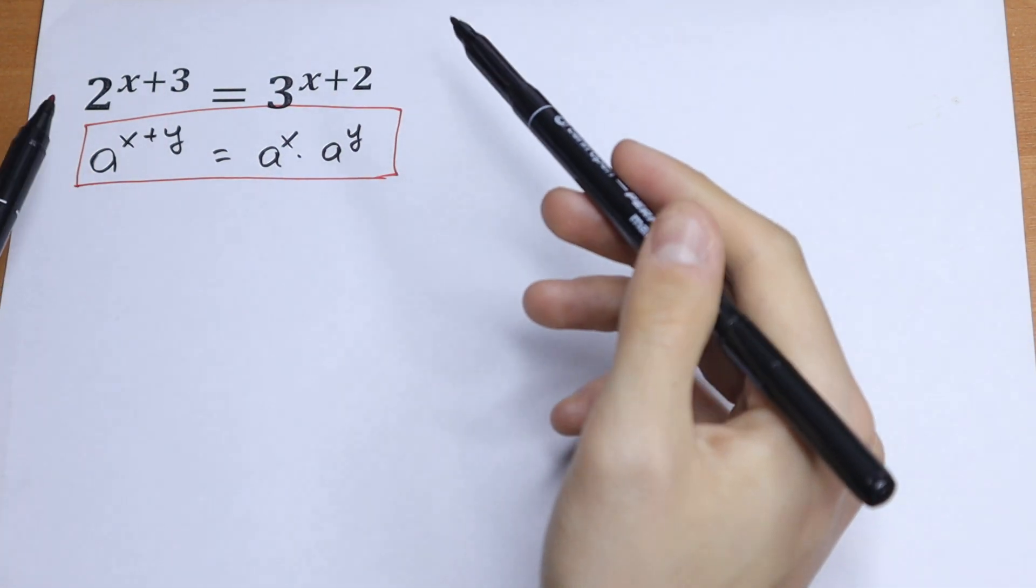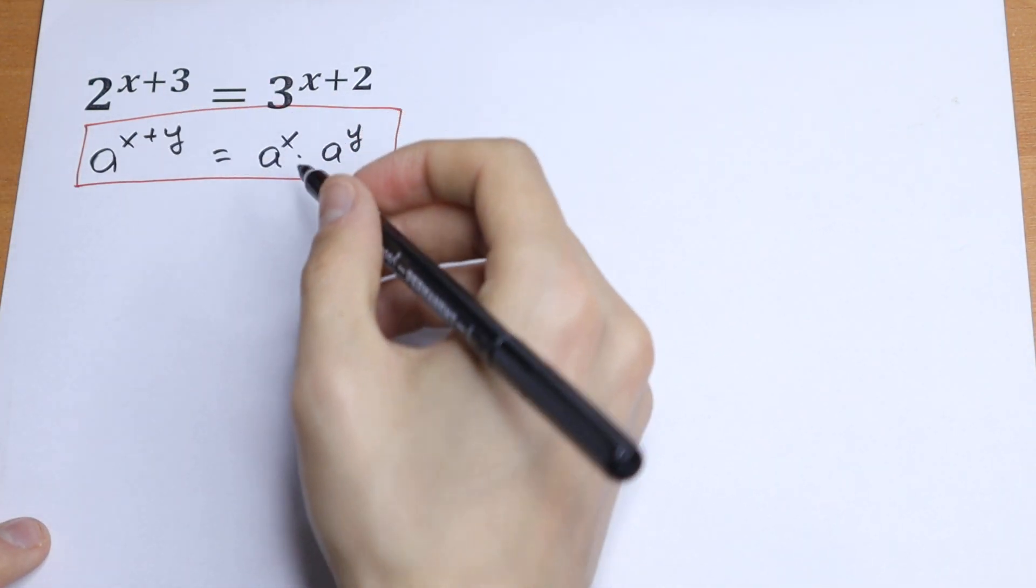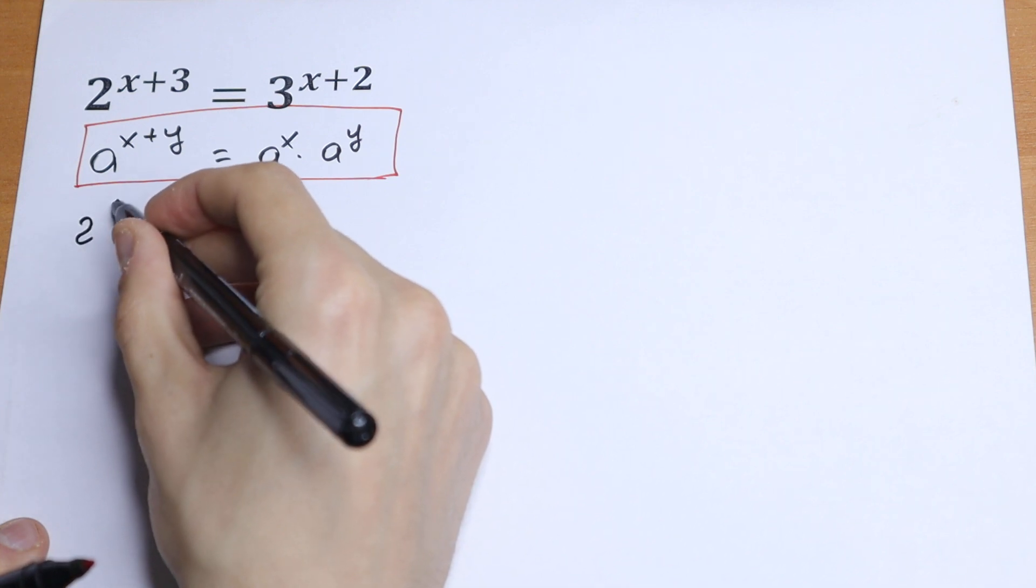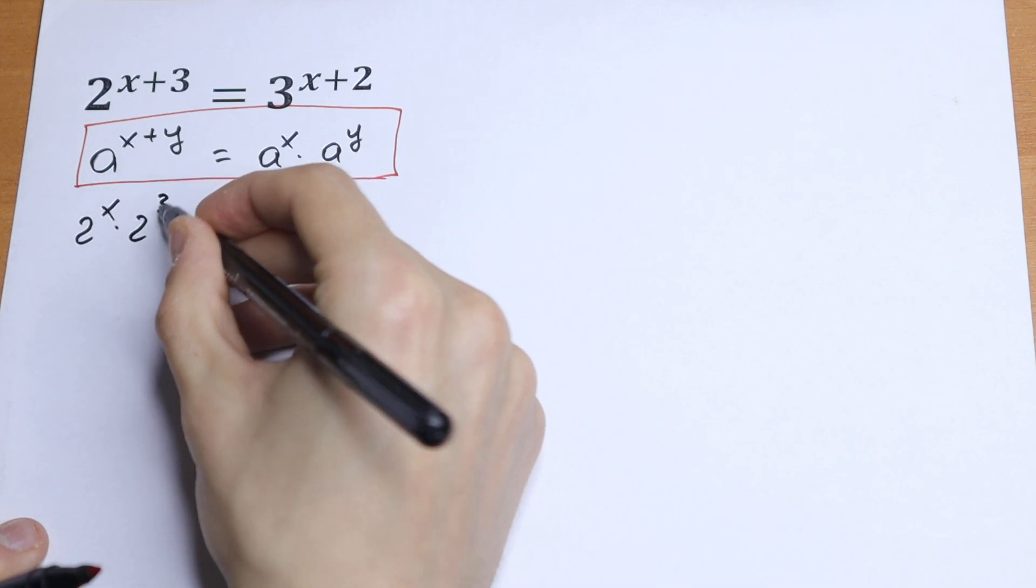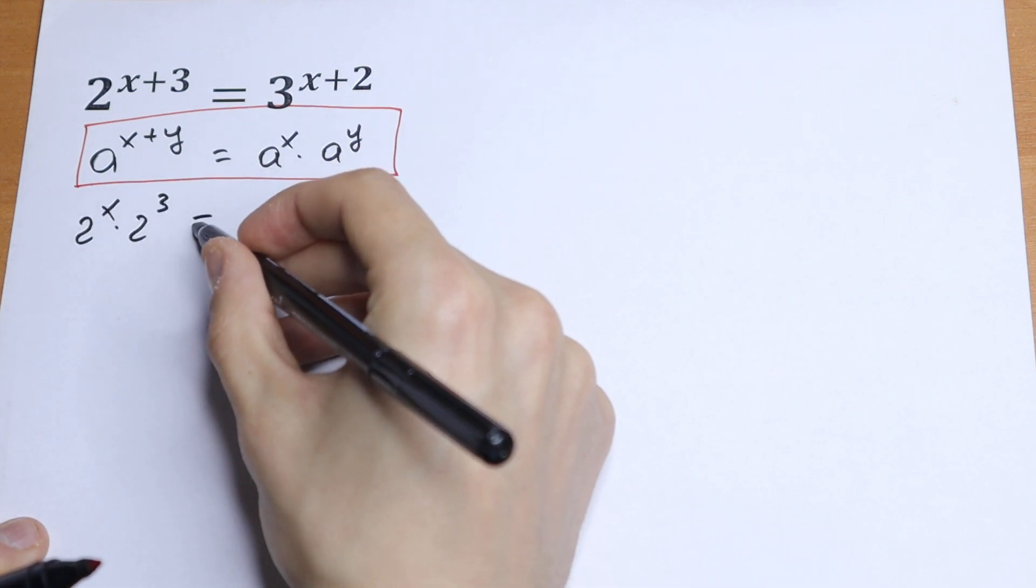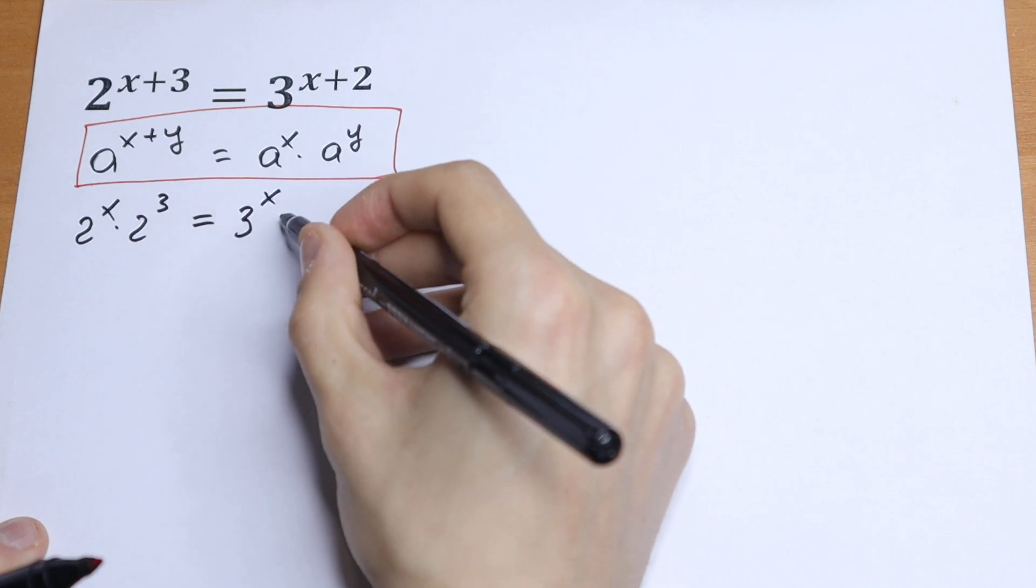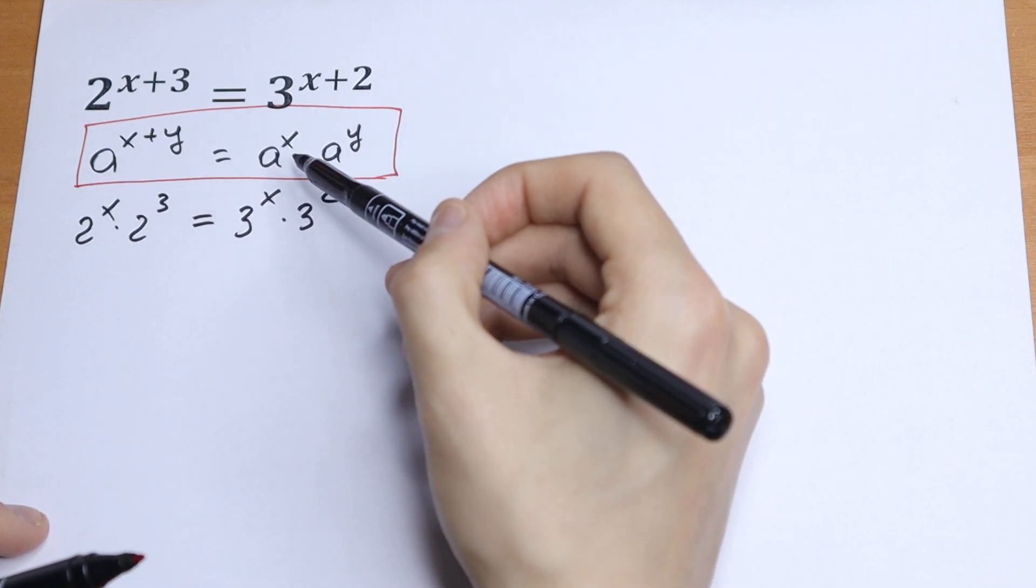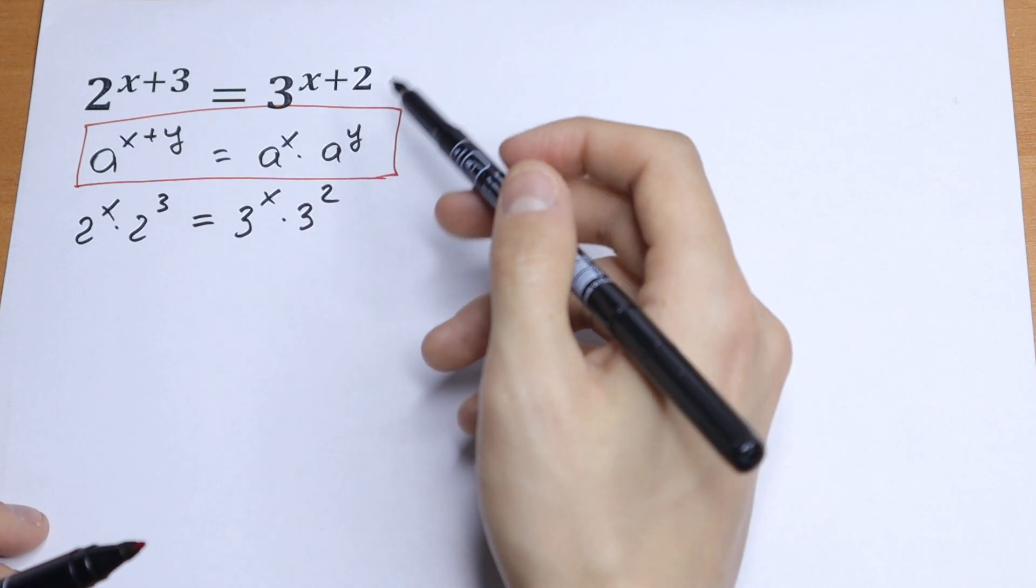We break the left side and the right side. On the left side, we will have 2 to the power x times 2 cubed. On the right, we will have 3 to the power x times 3 squared. Just use this rule.